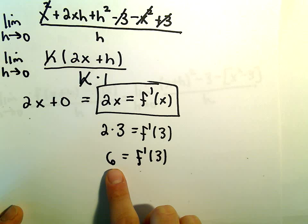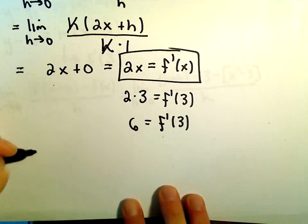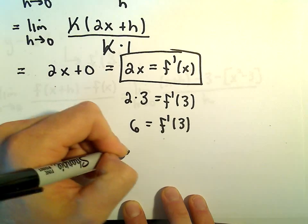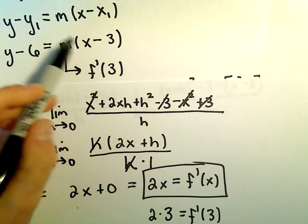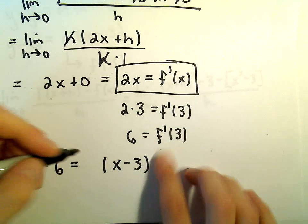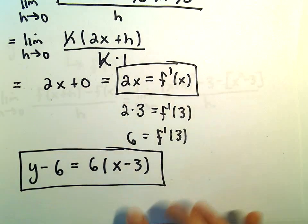Equivalently, the instantaneous rate of change, or you can think about it as being the slope of the tangent line on the graph, will be 6. So it looks like our equation, we had y minus 6. We had to figure out the slope. It was x minus 3 for the other part. We figured out the slope m, f prime of 3. We've got that to be the value 6. So now we've got the equation of our tangent line.